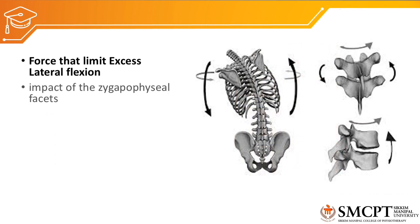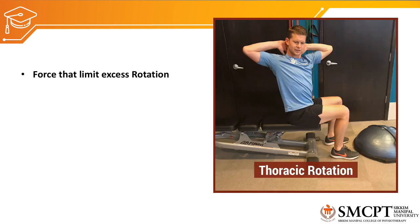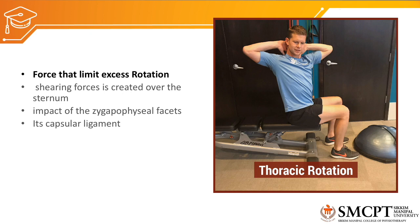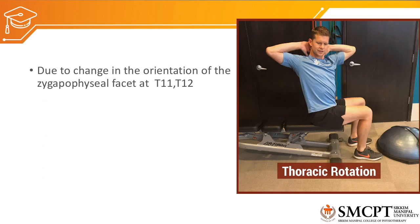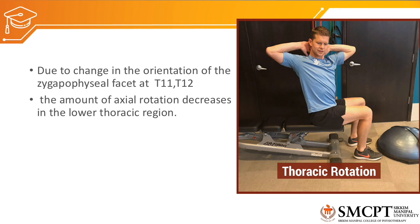The forces that limit lateral flexion are the impact of the zygapophyseal or facet joints, their capsular ligaments, and the limitations imposed by the ribcage itself. The forces that limit excessive rotation are the shearing force created over the sternum, impact of the facet joints, their capsular ligament, limitations imposed by the ribcage, the ligamentum flavum, and the transverse ligament. Uniquely, the ribcage restricts rotational movement of the thoracic spine. Additionally, due to the change in orientation of the facet joints at T11 and T12 — where they are approximately 90 degrees to each other — axial rotation is decreased in the lower thoracic spine.